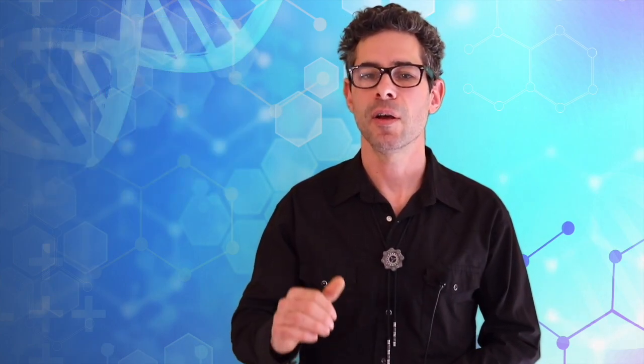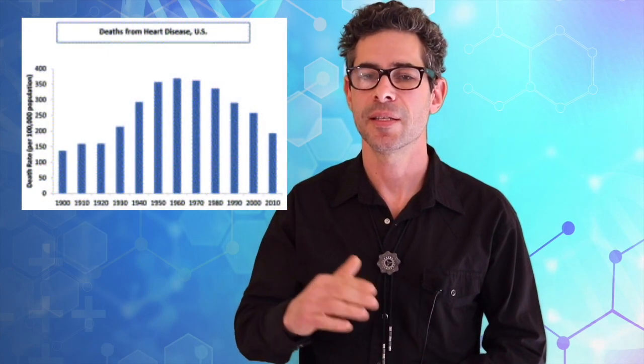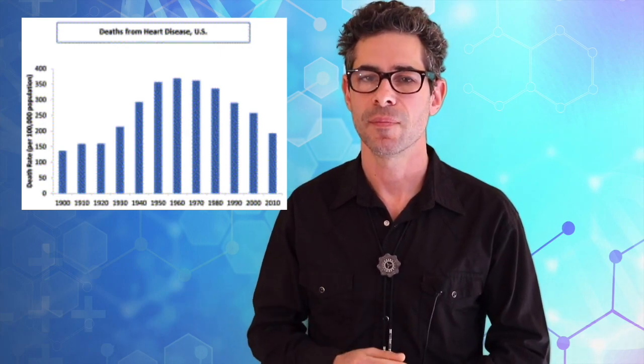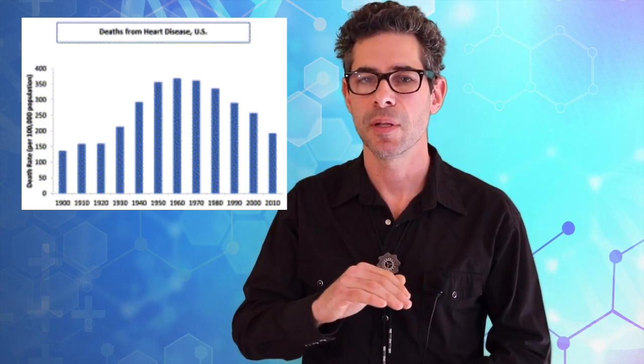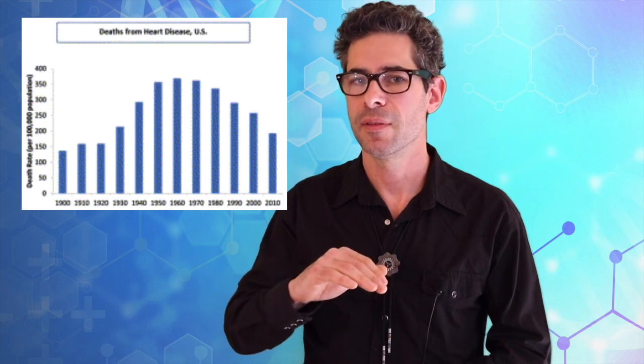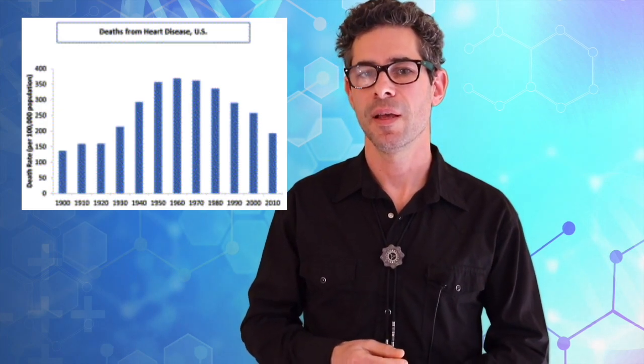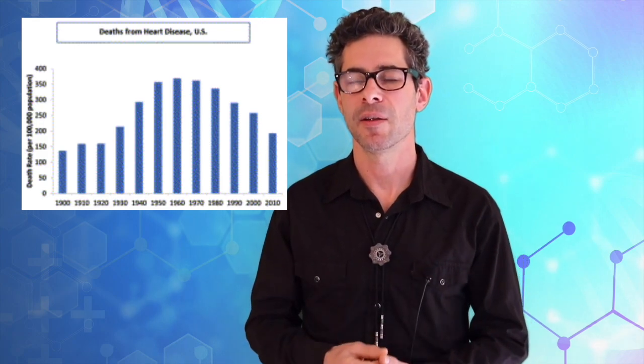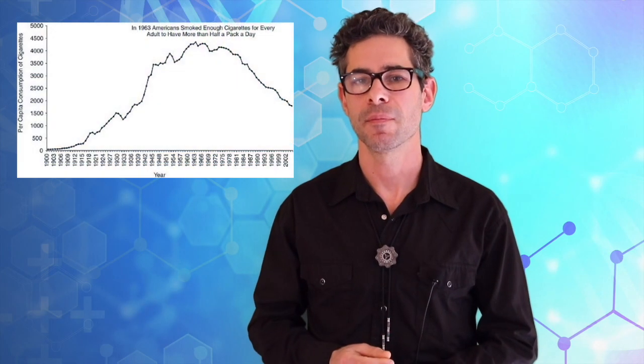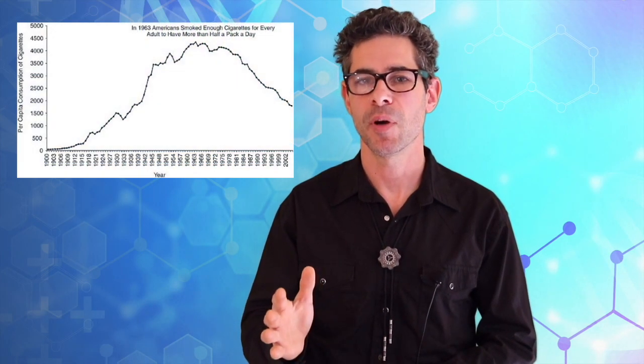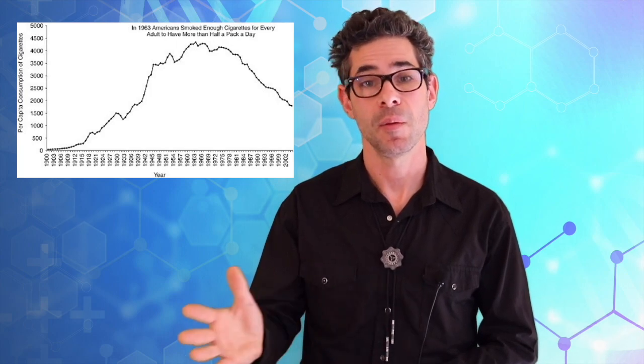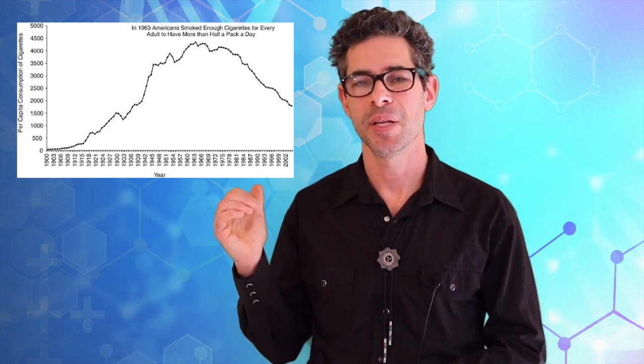Now, take a look at the graph of heart attacks in the United States in the last century. You'll see that they're stable up until the 30s. Then it starts to increase, peaking in the 60s. And then it's been coming down ever since. What matches that? The chart for cigarette smoking. People started smoking much more commonly in the 30s, peaked in the 60s, been coming down ever since.